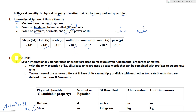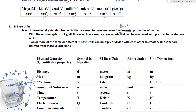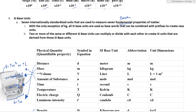Let's get back to talking about the SI base units. There are seven SI base units. They are seven internationally standardized units used to measure seven fundamental — think of the terms fundamental and base — properties of matter. Here are the seven fundamental properties of matter.